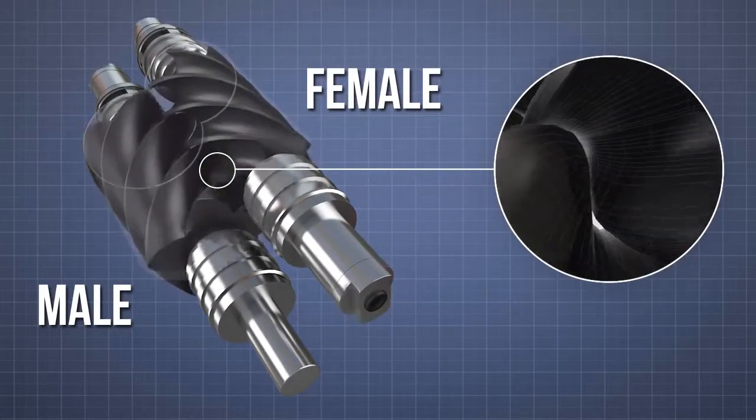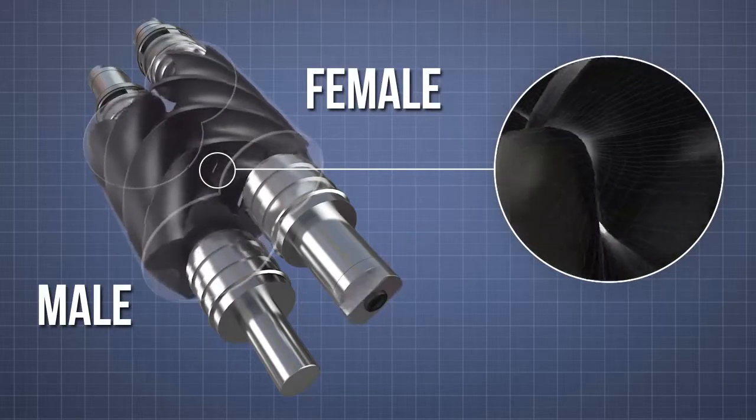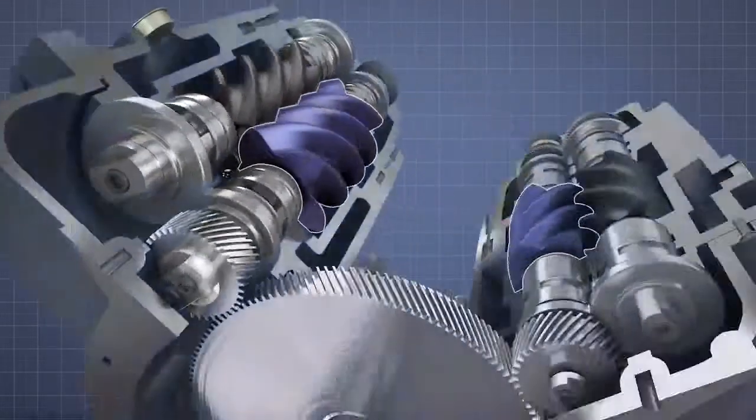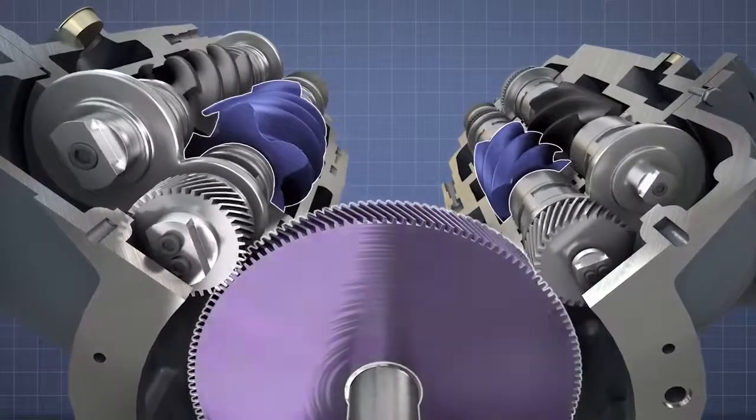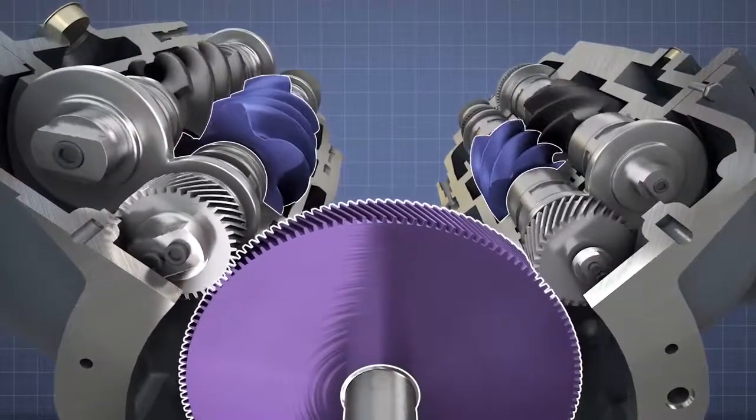Everything is separated by a precisely engineered air gap. The male rotors of both the first and second stages are driven by a single main gear at the back of the air-end.